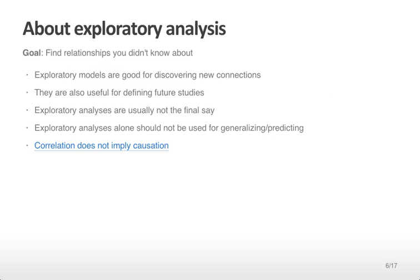The next kind of analysis is an exploratory analysis. Here the goal is to find relationships you didn't necessarily know about. It can be performed on a census data set, but it can also be performed on a smaller sample. Exploratory models are good for discovering new connections. They are also useful for defining future studies. But exploratory analyses are almost never the final say. The goal is to explore, not to necessarily define the relationships that you're finding.